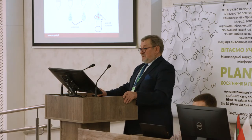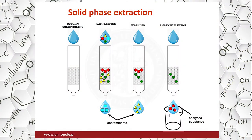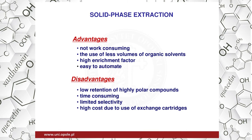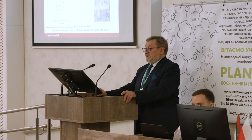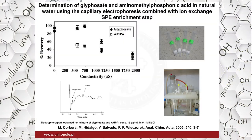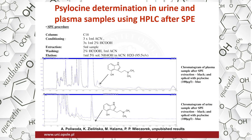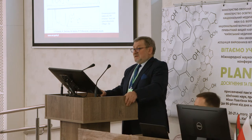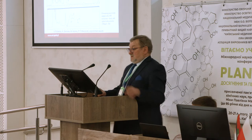The next method is solid phase extraction. For that we use different types of solvents. It uses less volumes of organic solvents — milliliters of organic solvents — but it is time consuming and has limited selectivity. We use, for example, ion exchange solid phase extraction for determining glyphosate pesticides and AMPA in real river water. Also this solid phase extraction we use for determining psilocin in urine, and we elaborated and proposed a method for determining these compounds in urine.